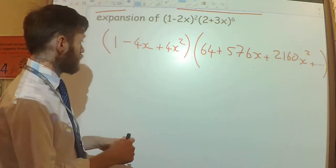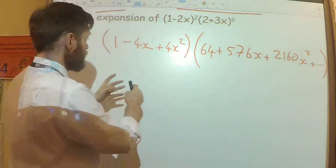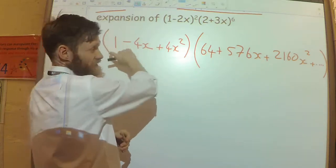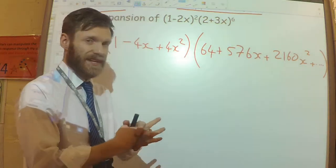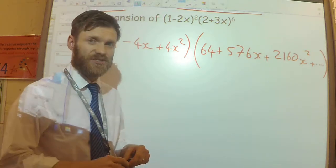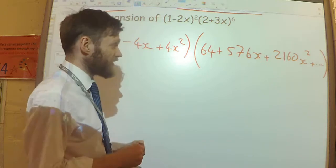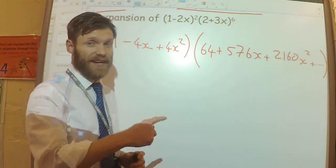With that in mind, I could multiply all of this out. I could go the 1 times the 64, the 1 times the 576x, the 1 times the 2160x squared. I could expand it all out. However, that's quite a long process. Instead, let's try and be smart about this and think about which terms do I actually need? Which terms, when I multiply, are going to give me an x squared?